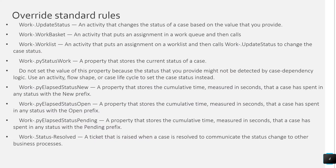There are some standard rules Pega provides. You don't have to remember all of them, but a couple are worth noting — especially those beginning with .py. Update status is an activity that changes the status of a case based on a value. Work basket refers to a queue that puts an assignment in a work queue. Work list puts an assignment on a work list. Work list is the list of work available to a particular group; work queue is your own personal queue where work is ordered by priority.